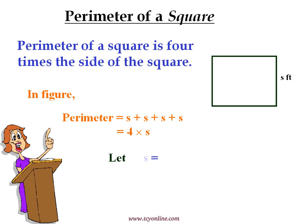In other form, perimeter will be equal to four times S feet. If S is equal to 5 feet, then perimeter should be equal to four times five, that is, 20 feet.